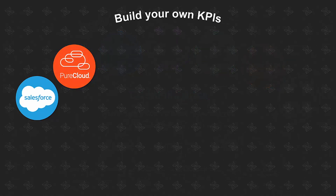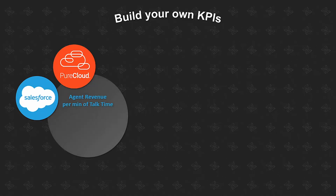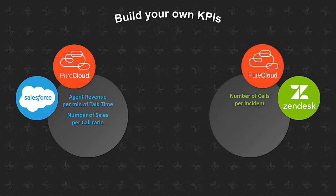This ultimately allows you to build your own cross-correlated KPIs. For example, combining Salesforce and PureCloud data, you can create KPIs like agent revenue per minute of talk time or number of sales per call ratio. Taking Zendesk cross-correlated with PureCloud data, you could have a KPI for the number of calls per incident or tickets with no interactions over the past seven days.